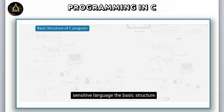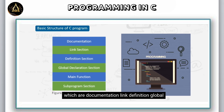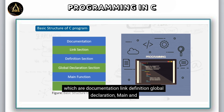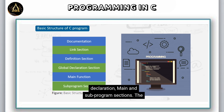The basic structure of a C program consists of six main sections, which are: documentation, link, definition, global declaration, main, and sub program sections.